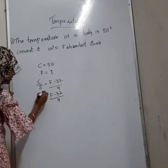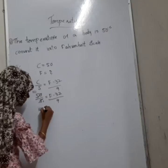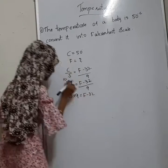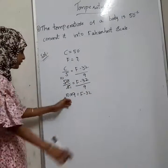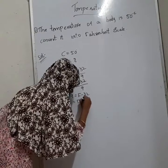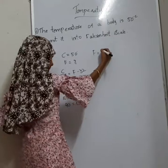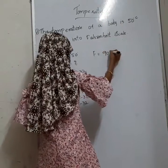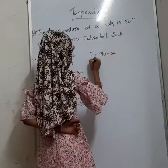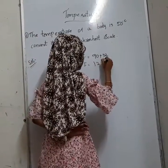So 10 into 9 is equal to F minus 32. Multiplying these numbers, 90 is equal to F minus 32. Therefore, F is equal to 90 plus 32, which gives F is equal to 122 degrees Fahrenheit.